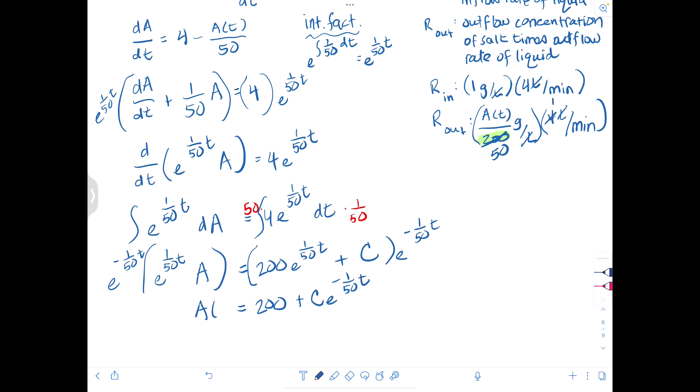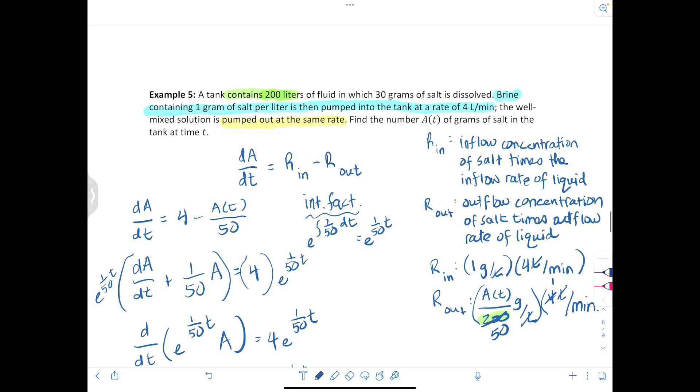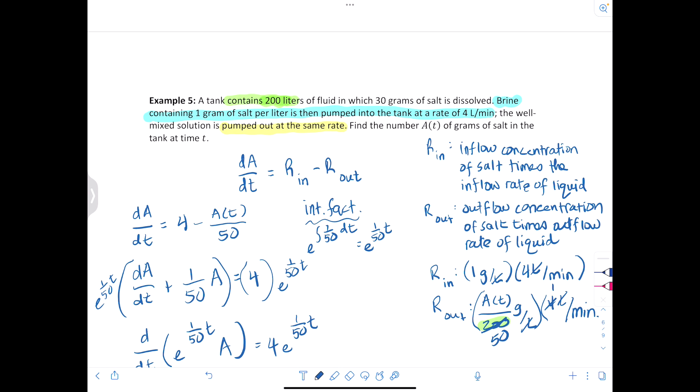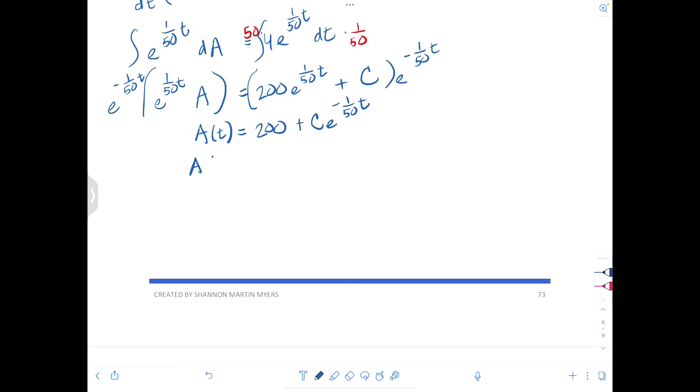Now let's look at the other information. Do you see that we haven't used this little bit yet here? Alright, and so we can say that the initial amount of salt is 30 grams. Now so A(0) is 30. So we can say 30 is equal to 200 plus C e to the negative 1/50 times 0. So 30 equals 200 plus C, and negative 170 is equal to C.